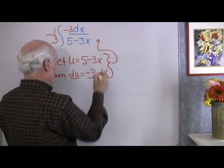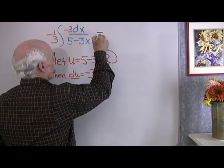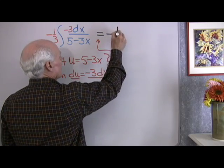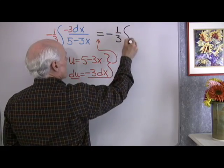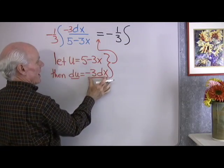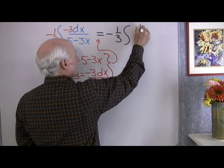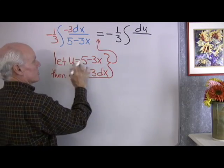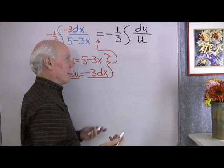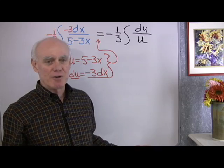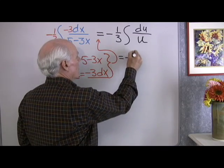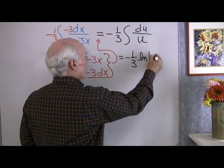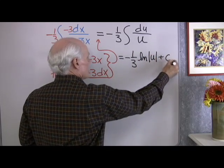So, okay, I'll take this substitution right here, rewrite the integral in terms of my substitution, so I have negative 1 third times the integral of negative 3 dx, which is, remember, du, all divided by 5 minus 3x, which is just u. Okay, that's exactly what I want. I know how to integrate that. It's very simple. This just becomes negative 1 third times natural log absolute value of u plus c.